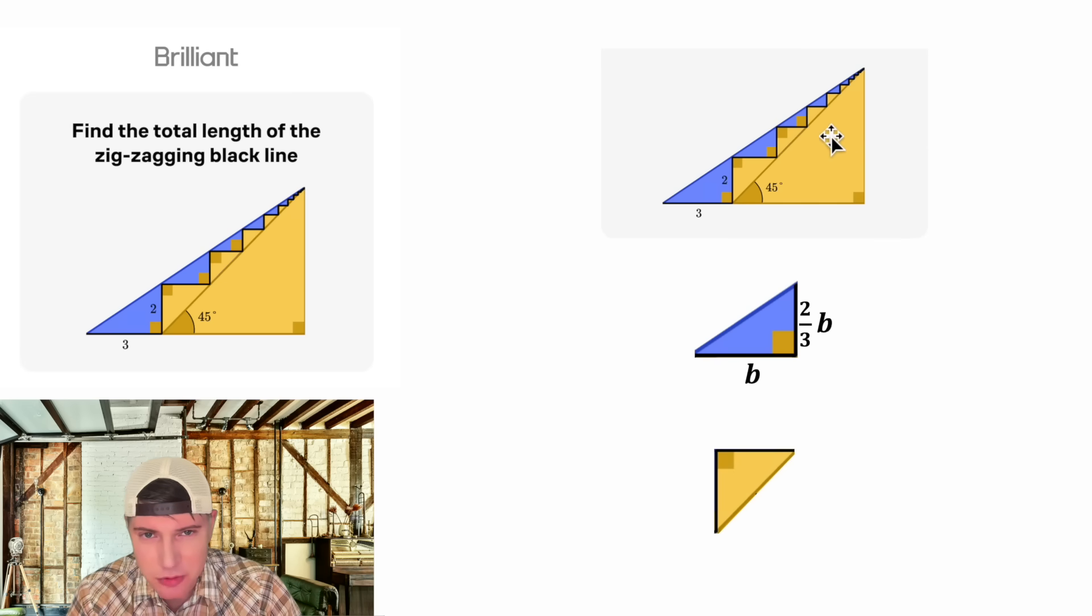And then we can focus on these yellow triangles. This angle is 45 degrees as well, so this is a 45-45-90 triangle. And same thing, they're all going to be similar. They'll all be 45-45-90 triangles. And whatever this side is, this side will also be equal to that.